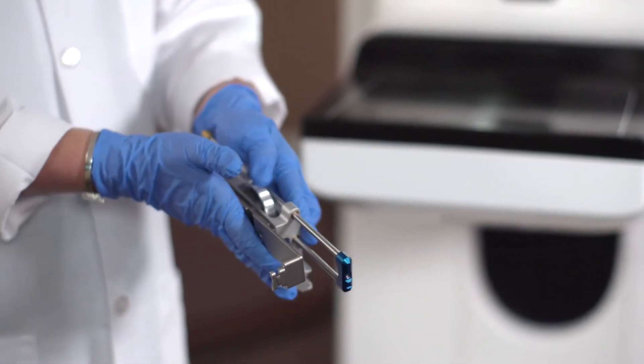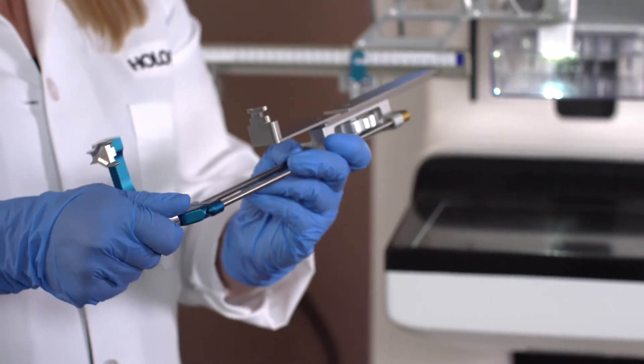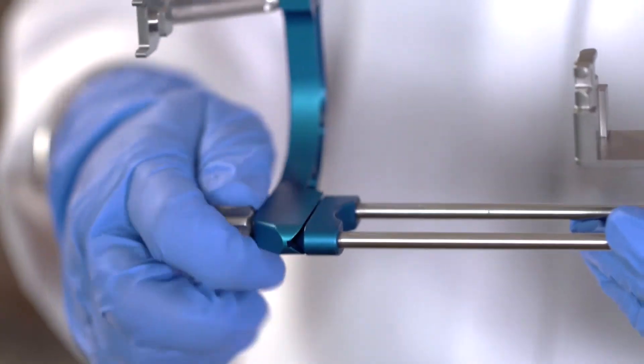Connect the Aviva adapter to the carriage according to the color coding, blue in this case. After attaching the adapter, the needle guide is attached.